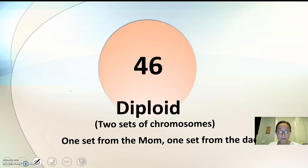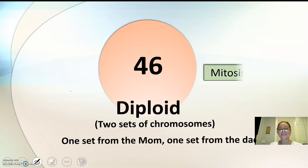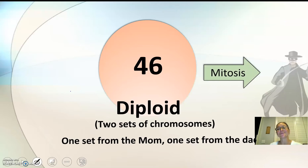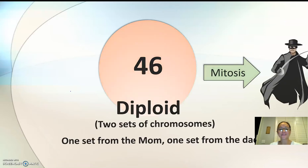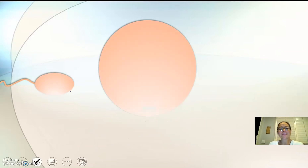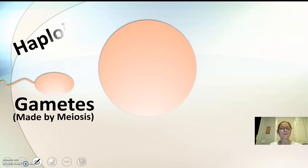This diploid cell will reproduce by mitosis to form other somatic cells — that's how you get fully formed adults or humans or organisms. When we talk about haploid, we reference it with N, because different organisms have different chromosome numbers. A dog, for example, has 78 chromosomes.